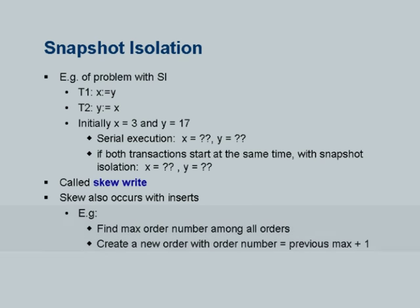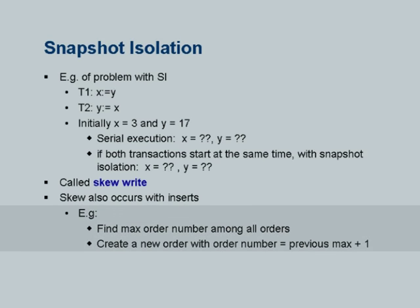Here is another example. Every order which a company receives has to be entered in a database with a new identifier, and most systems will require that there will be no gaps — financial auditors do not like gaps in sequences. So any financial system finds the current maximum order number, adds 1 to it, and creates a new order with that number. Let us say two people are trying to order simultaneously — both copies read all the orders and find the maximum order number. Both of them are going to get the same order number because they are reading from the same snapshot.